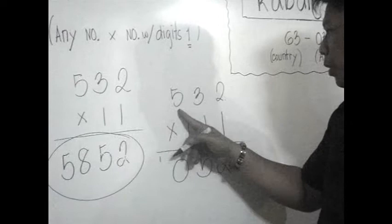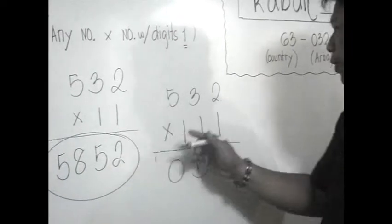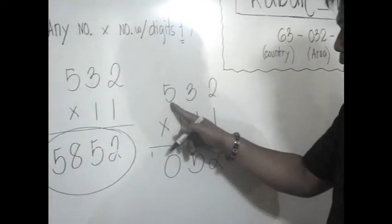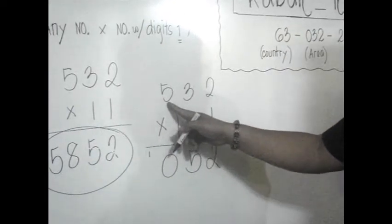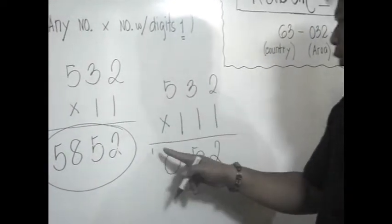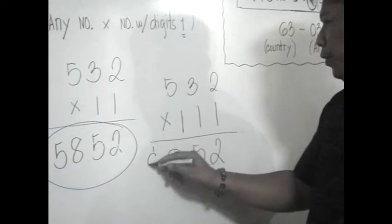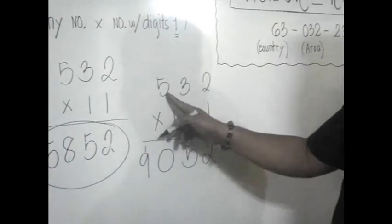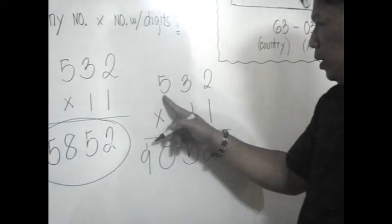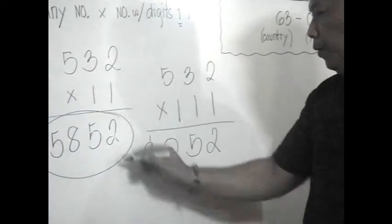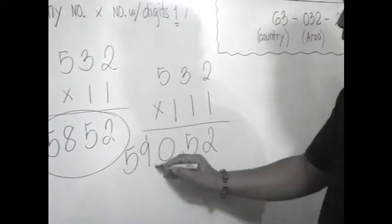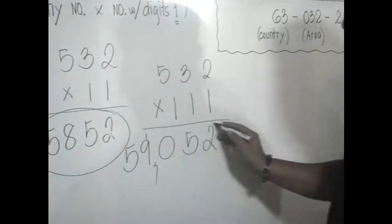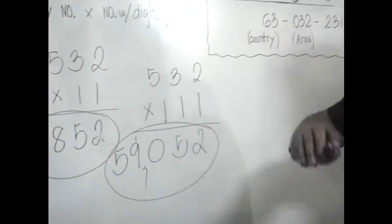Then, go back to 2. Because, you have no longer digits in the leftmost. You just cut these 2. Then, it will give you 8. Then, plus 1 will give you 9. And then, after these 2, go back to this 1 to the left. You have 5. The answer is 59,052.